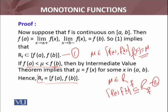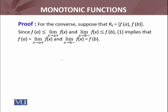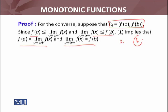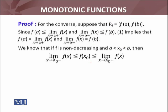For the converse, suppose that range of f equals [f(a), f(b)]. Now we need to show that the function is continuous. Since f(a) ≤ right-sided limit of f(x) as x approaches a, and the left-sided limit as x approaches b of f(x) ≤ f(b), this implies that f(a) equals f(b) at the endpoints. This means the function is right-continuous at a and left-continuous at b. Now we use the theorem for interior points.